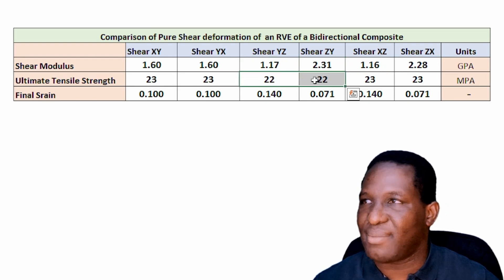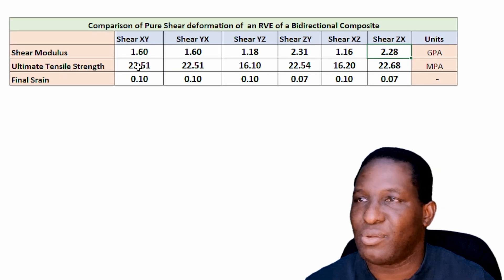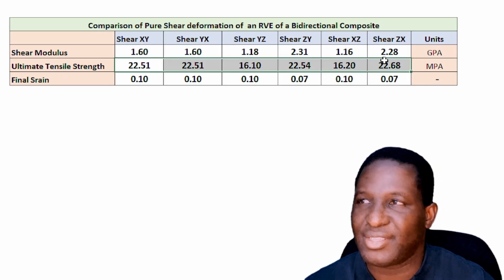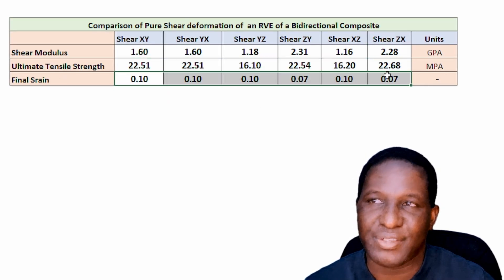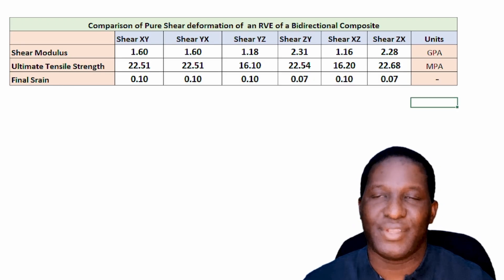We can also look at the final strain of the system and the strength values. If you want to see how to actually create the representative volume element model of this bidirectional composite, there is a video for that. If you just want to see how the shear load was set up before looking at this result, there is the model setup video for the shear. Thank you for your interest and I'll see you in the next video.